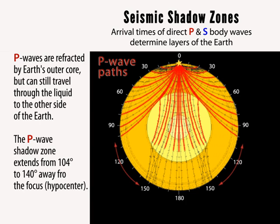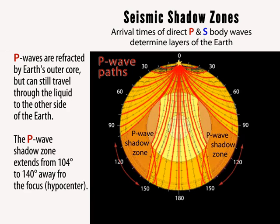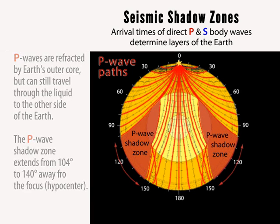At the core mantle boundary, they are refracted or bent inward and slow down in the liquid. It's this refraction that causes a shadow zone between the angular distances from 104 to 140 degrees from the earthquake.